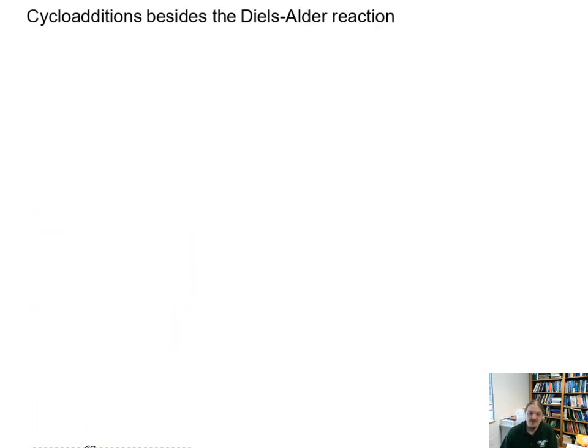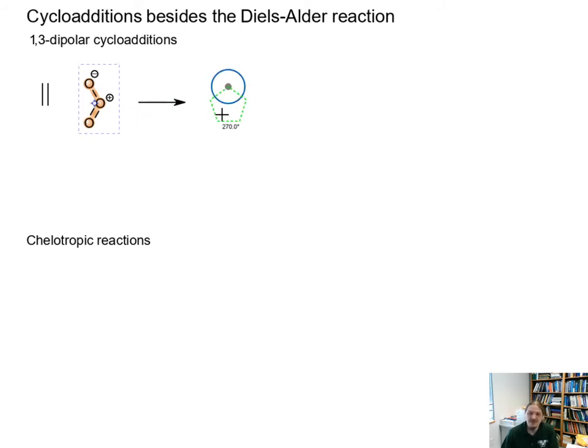Let's take a step back and talk about different kinds of cycloadditions now. 1,3-dipolar cycloadditions and then the chelotropic reactions. 1,3-dipolar cycloadditions use a slightly different kind of pairing. The reality is, you're probably already familiar with one of these, depending on the sequence of topics in your organic chemistry course. If you have learned about the ozonolysis reaction, you are familiar with 1,3-dipolar cycloadditions.